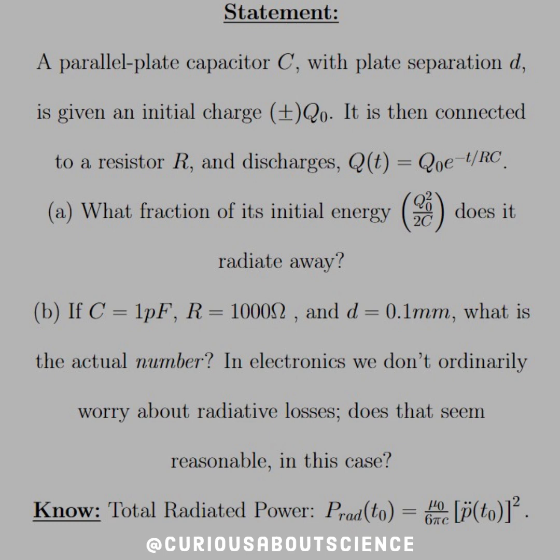The statement reads: a parallel plate capacitor C with a plate separation D is given an initial charge plus or minus Q0. It is connected to a resistor R and discharges at a rate Q(t) equals Q0 e to the negative t over RC. Part (a): what fraction of its initial energy, Q0 squared over 2C, does it radiate away?